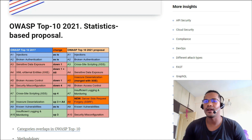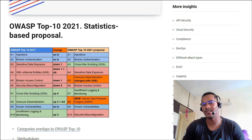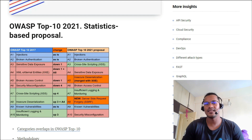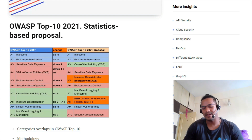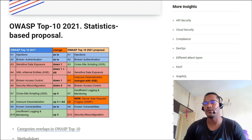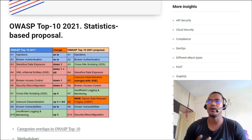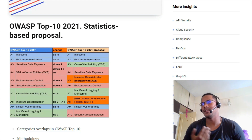A1 and A2 are injection and broken authentication, which are always highly or critically rated bugs and always on top. Then there's a first change: instead of sensitive data exposure at A3 (which is still there per 2017), it's being replaced with XSS, because there are tons of XSS findings gathered from different bug bounty platforms like HackerOne. That's why they have considered increasing the OWASP ranking of XSS to A3, where it was earlier around A7.